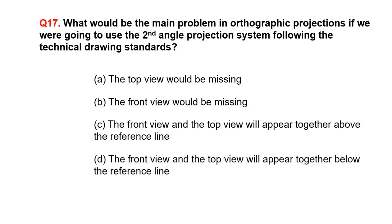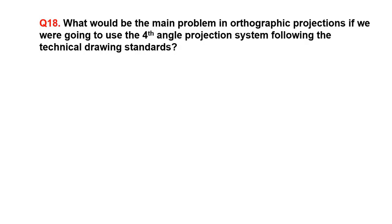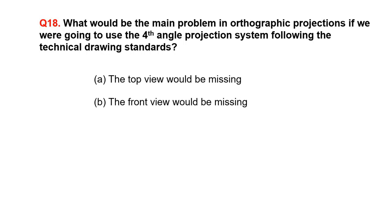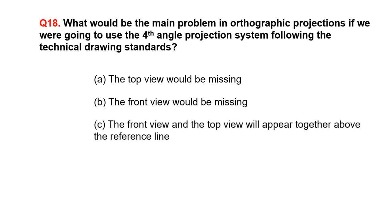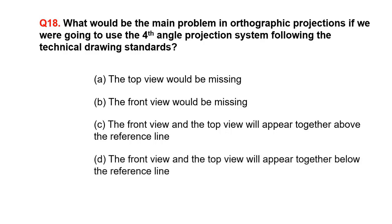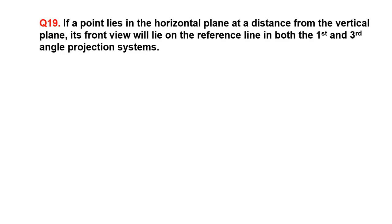What would be the main problem in orthographic projections if we were going to use the fourth angle projection system following the technical drawing standards? A. The top view would be missing. B. The front view would be missing. C. The front view and the top view will appear together above the reference line. D. If a point lies in the horizontal plane at a distance from the vertical plane, its front view will lie on the reference line in both the first and third angle projection systems.